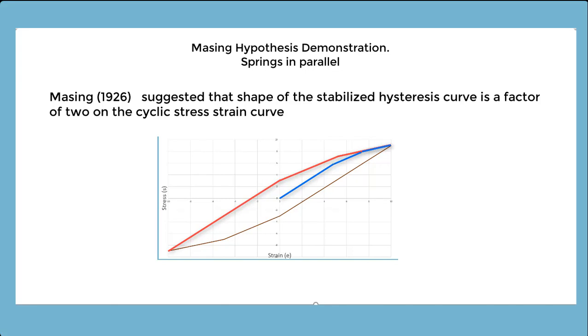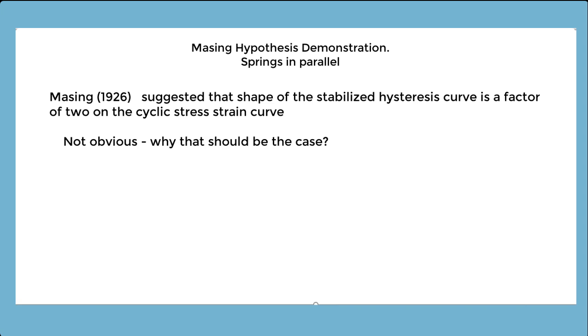In a paper in 1926, Masing suggested that the shape of the stabilized hysteresis curve is a factor of 2 on the cyclic stress-strain curve. Now that really isn't obvious. Why should that be the case? I often get asked that question on fatigue training courses.